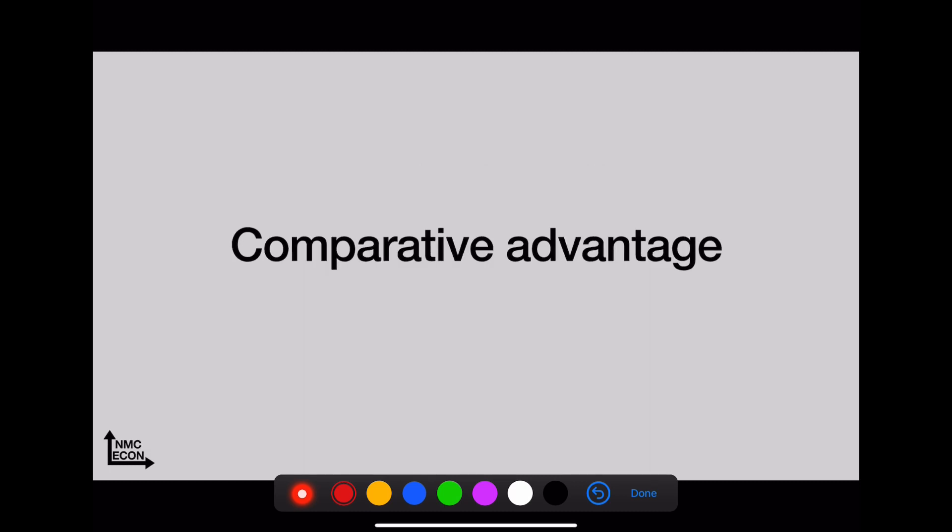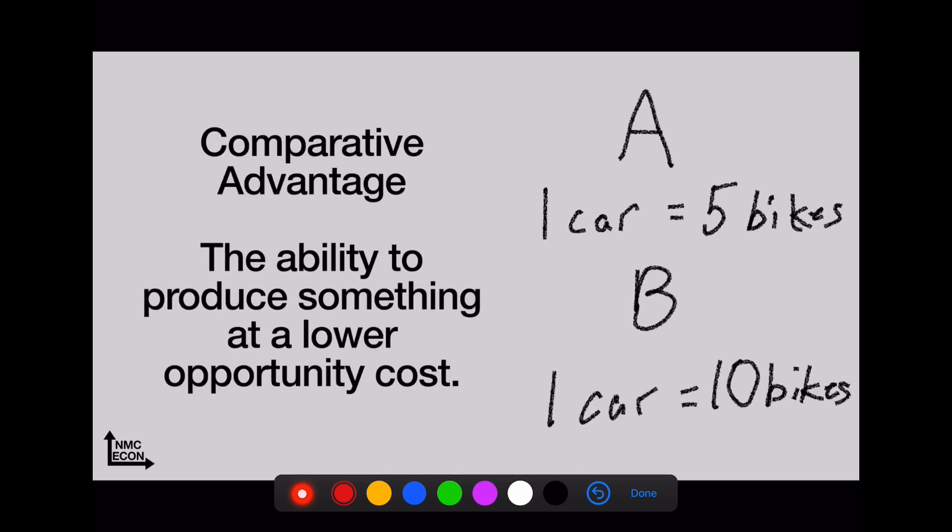Comparative advantage, on the other hand, is really interesting. This is when you have the ability to produce something at a lower cost. Look here: country A and country B. Country A can produce a car but they have to give up five bikes to do so. Country B, on the other hand, they got to give up 10 bikes. So who has the lower opportunity cost? Well, it would be country A. So what should they make? They should make cars. Guess what country B should make? Bikes. It's always the opposite, by the way.